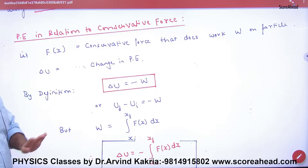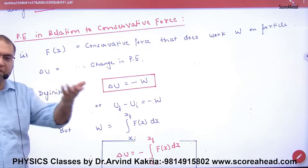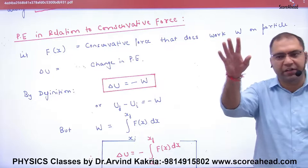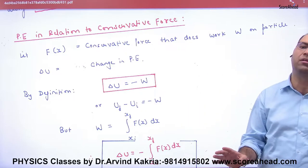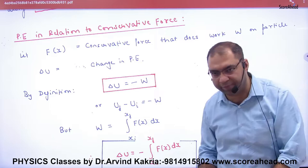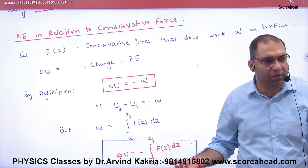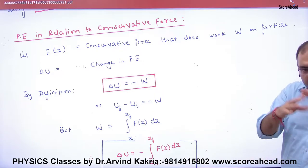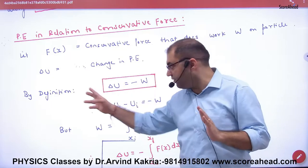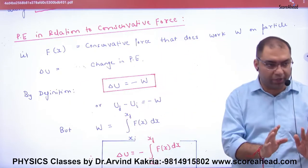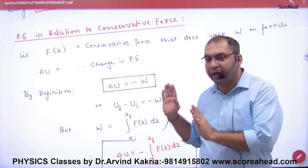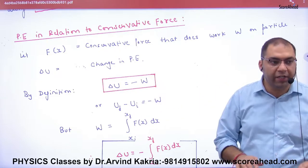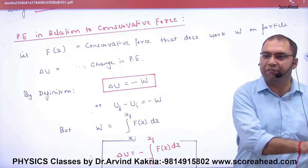Today's lecture is about potential energy in relation to conservative force. The first and best example of a conservative force is gravity. According to the definition, the change in potential energy is equal to minus of the work done. This is the key definition: change in potential energy is negative of work done.